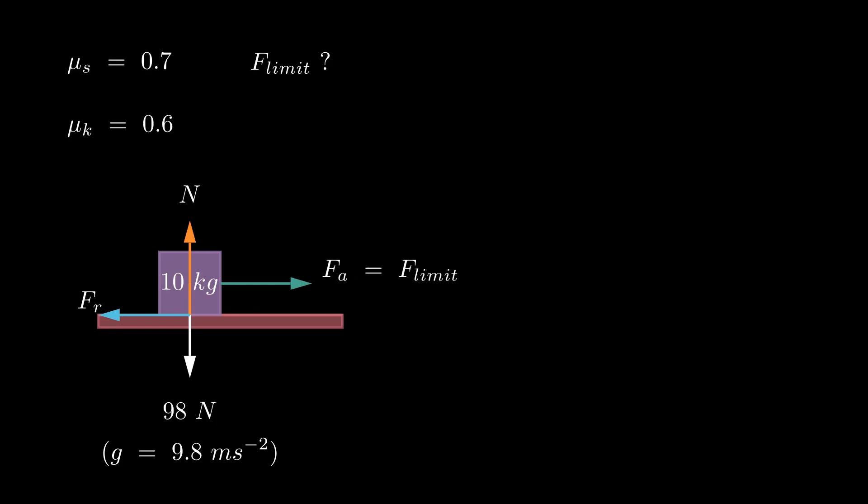Let's examine this example to grasp the fundamental application of friction. We have a 10 kg object placed on a rough surface, with a static friction coefficient of 0.7 and a kinetic friction coefficient of 0.6. First, we want to figure out the maximum force of friction that can keep it from moving. The free body diagram of the object is shown on the screen. Given the absence of acceleration in the direction of the normal force, we can determine that the normal force has a value of 98 N.